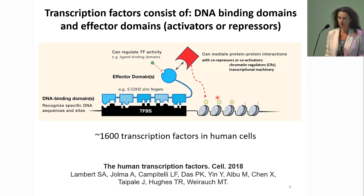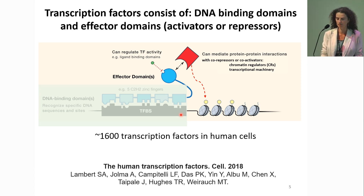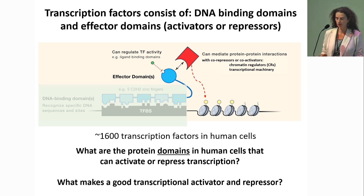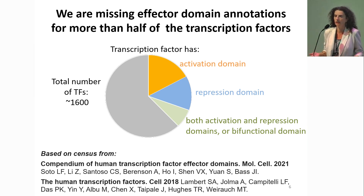In human cells there are about 1,600 transcription factors. I urge you to look at this beautiful 2018 review cataloging them by their DNA binding domains, which are much better understood because they are well-structured and conserved. What we're more interested in, in my lab — and it's a new focus in the field — is how the effector domains work: what protein domains in human cells can activate or repress transcription? When I started my lab, more than half of the 1,600 human transcription factors were missing annotation on whether they have activation or repressor domains.